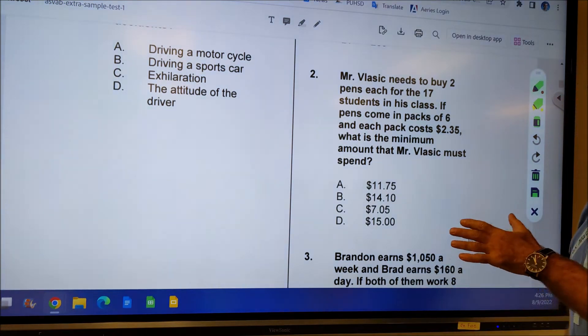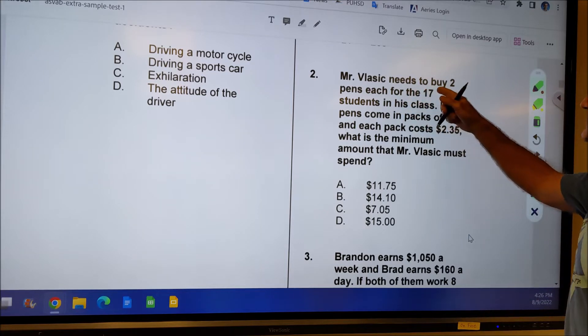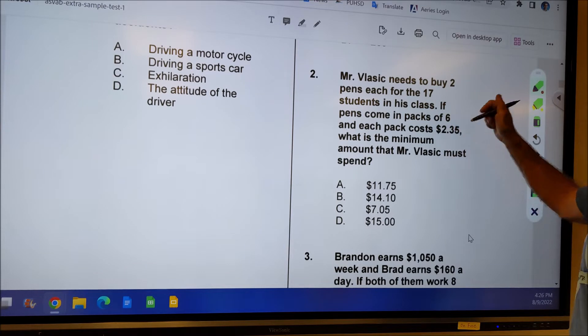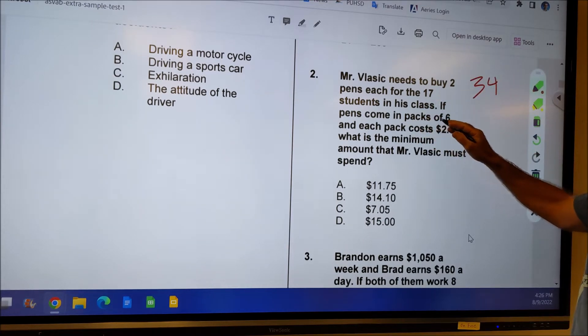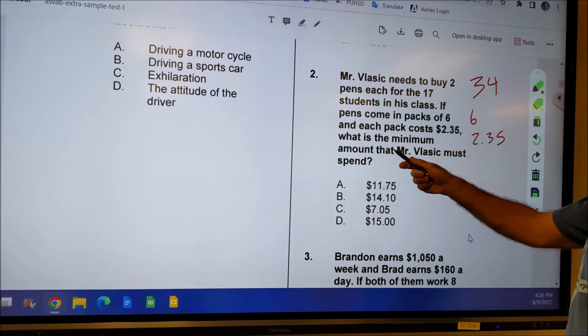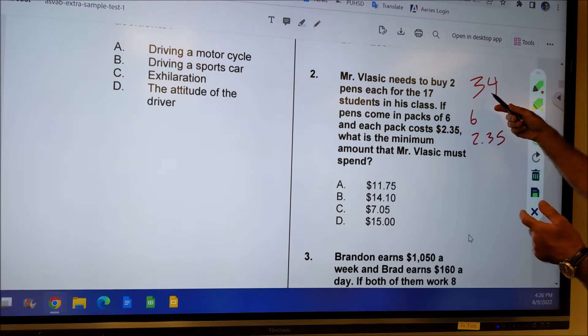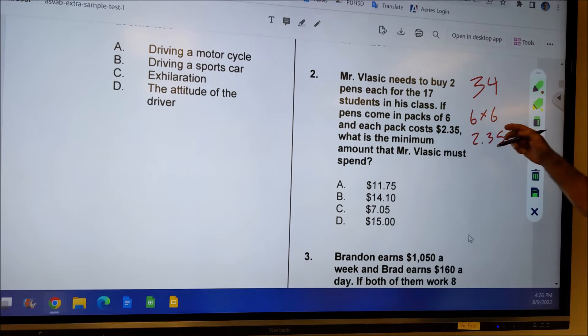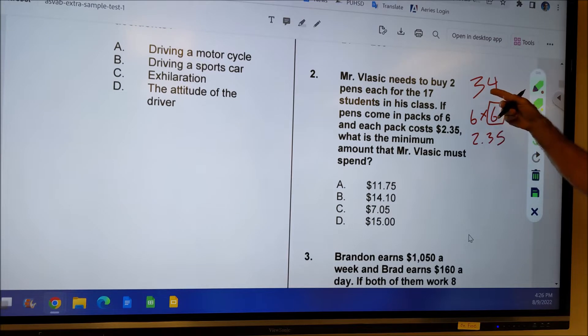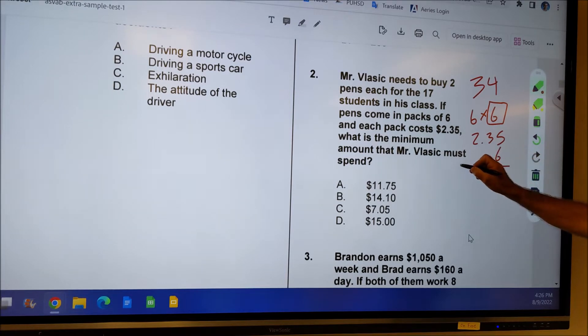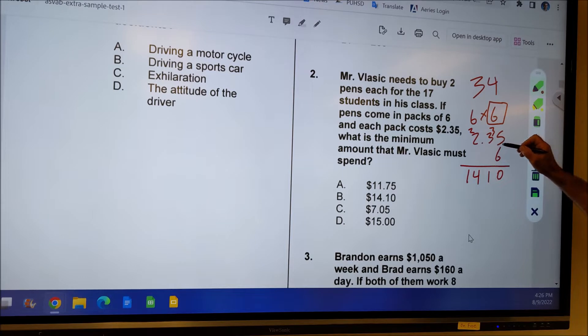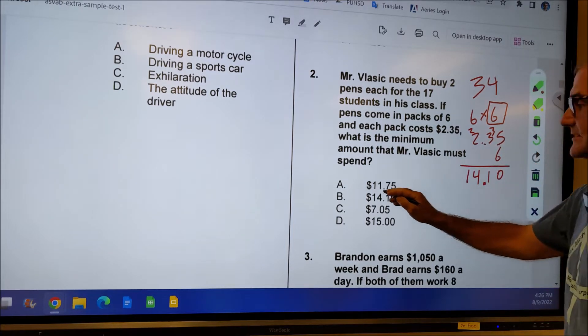Number two. Again, this is chapter one in my video series about math operations, whole numbers. Mr. Vlasic needs to buy two pens for every one of his 17 students. So that means he needs a total of 34 pens, 17 times 2. If pens come in packs of six, each pack costs $2.35. What's the minimum amount that he has to spend? Well, six goes into 34. Six times six is 36. So he needs to get six packs of pens times six. So I do six times 235. Six times five is 30, carry the three. 18 plus three is 21. This is in decimal. If I'm two places over here, I'm two places over here. And my correct answer is answer B right there.